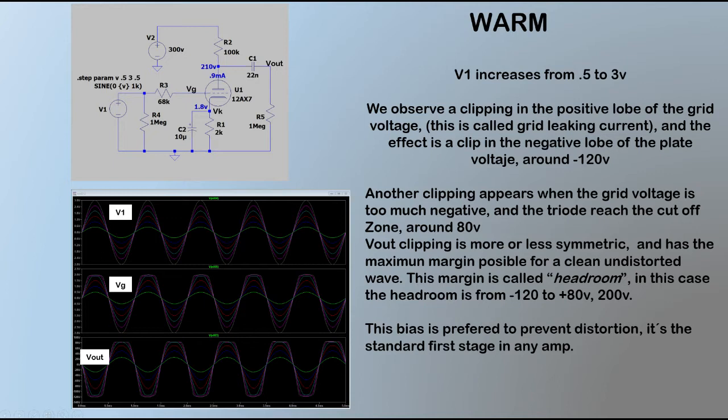We can see the warm bias in the first stage of any amp. It is necessary to clarify that although we say saturation in the positive cycle of the grid, it's not a real saturation because the anode follows the grid signal and this is clipped before the tube saturates.